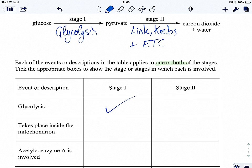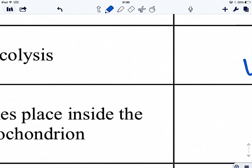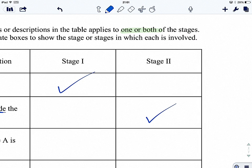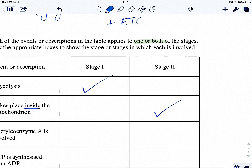Second question is asking which of the stages takes place inside the mitochondrion. Glycolysis takes place in the cytoplasm, which is where the enzymes are for glycolysis to occur. It's link, Krebs, and the electron transport chain that take place inside the mitochondrion, either in the matrix or on the inner mitochondrial membrane where it's folded into the cristae.